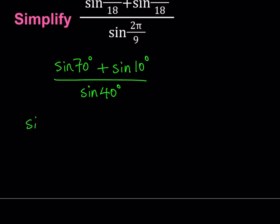So I'm going to be writing, and one thing to notice here is that 70 and 10, if you average them, you get 40, which is important. So I'm going to take the average of 70 and 10, which is 40, so I'm going to express 70 and 10 using 40 and 30 degrees. Why?